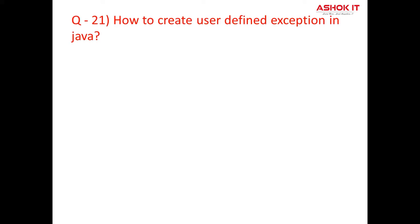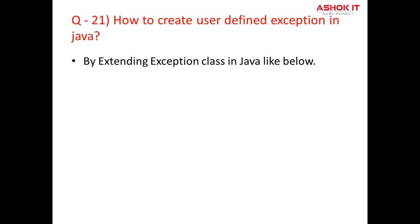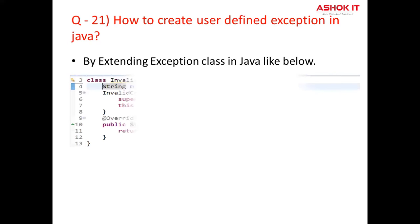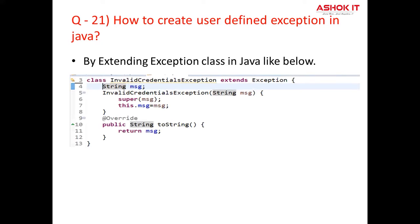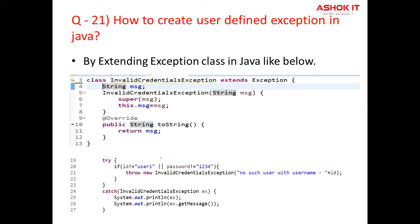Question number twenty-one: How to create a user-defined exception in Java? Java provides us the facility to create our own exceptions, which are basically derived classes of Exception. In this program, this InvalidCredentialException class extends Exception. So InvalidCredentialException is our custom exception. Creating our own exception is known as a custom exception or user-defined exception. Java custom exceptions are used to customize the exception according to the user's need. In the second screenshot, you can observe that InvalidCredentialException is used in the try block.